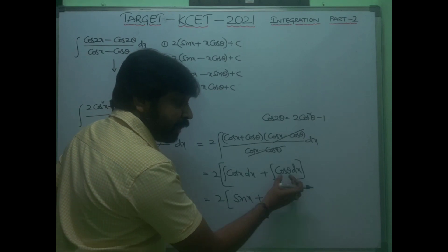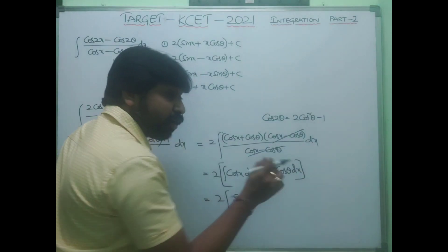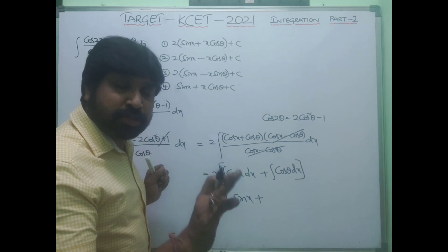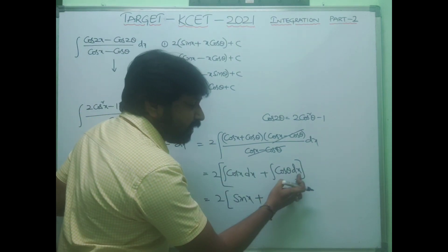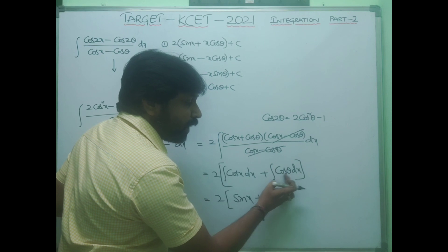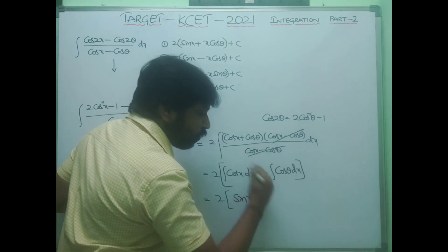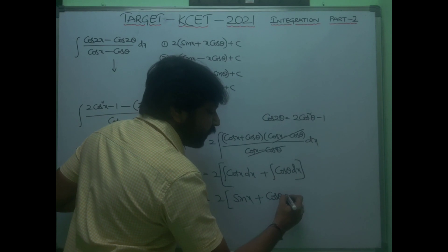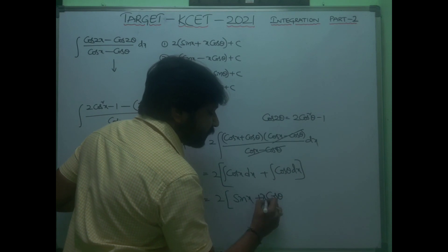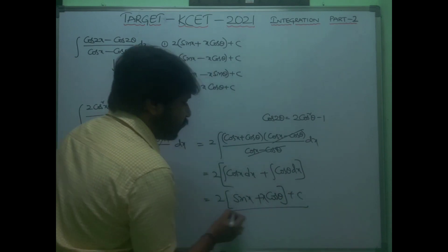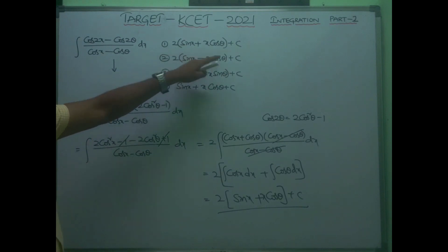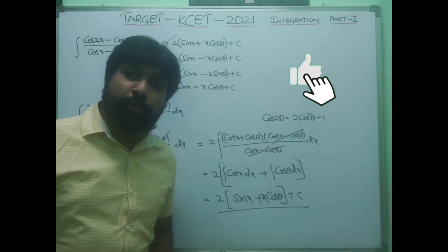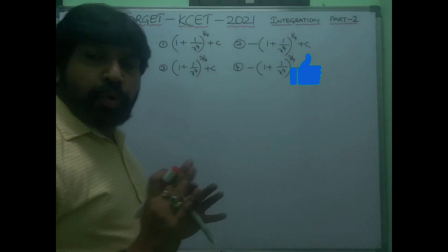cos θ does not depend on x, so it is treated as a constant and kept outside: 2∫cos x dx + 2·cos θ·∫1 dx. This gives 2·sin x + 2·cos θ·x + C. So the answer is 2 sin x + 2x cos θ + C.